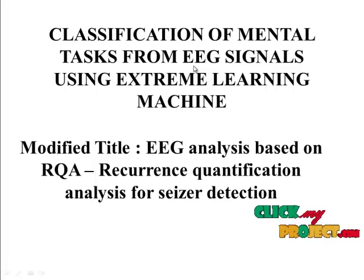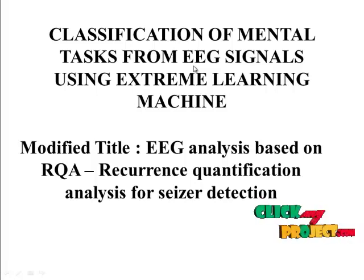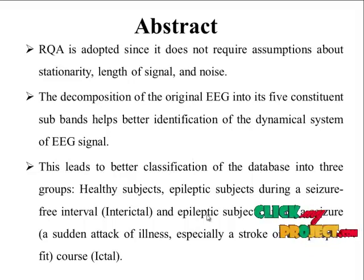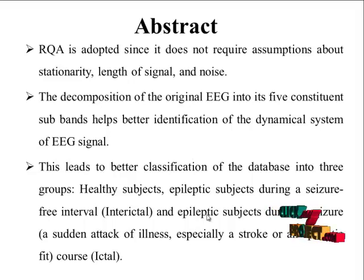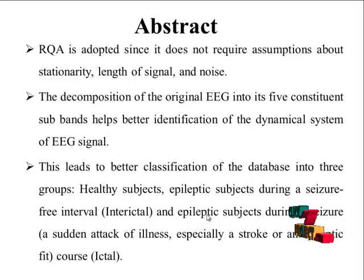As our enhancement, we are modifying the title — we are processing based on recurrence quantification analysis for seizure detection. This project represents applying RQA on EEG recordings and their subbands. The subbands are delta, theta, alpha, beta, and gamma for epileptic seizure detection.